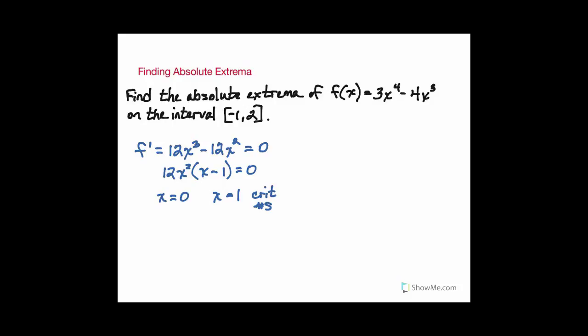So absolute extrema are going to occur either at these critical numbers or at the endpoints of the function. So we need to evaluate all four of these values: the two critical numbers and the two endpoints of the interval into the function. So we'll have to do f of negative one, f of two—does not matter the order in which you do this.